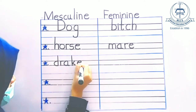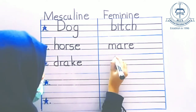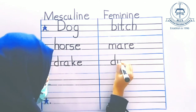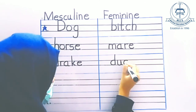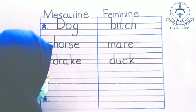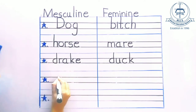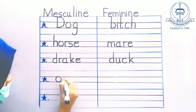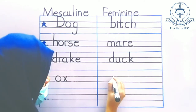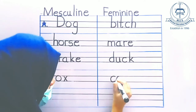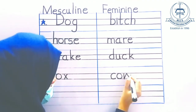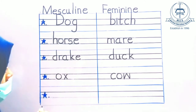D, R, A, K, E — drake. D, U, C, K — duck. O, X — ox.